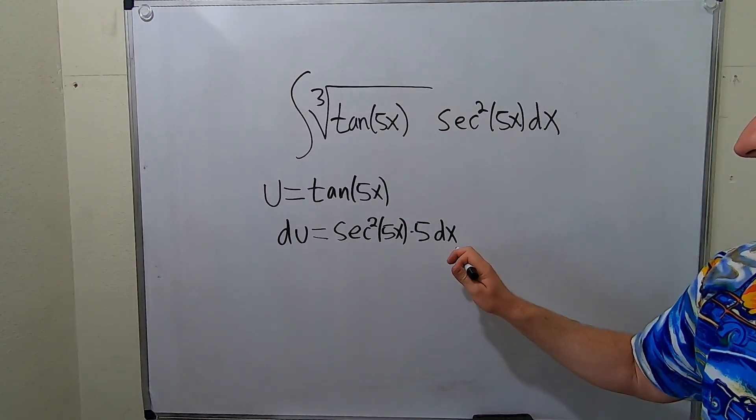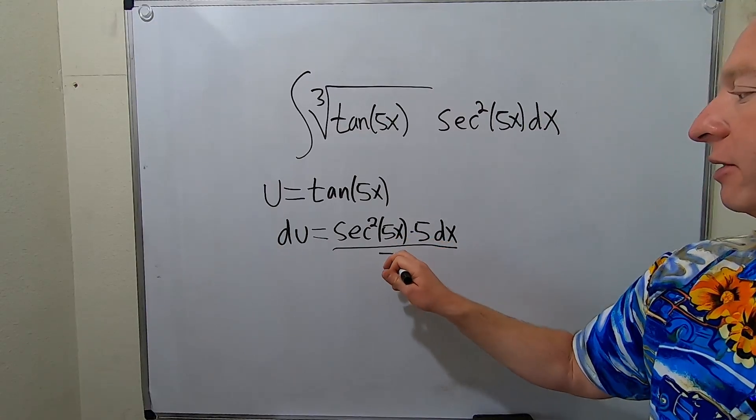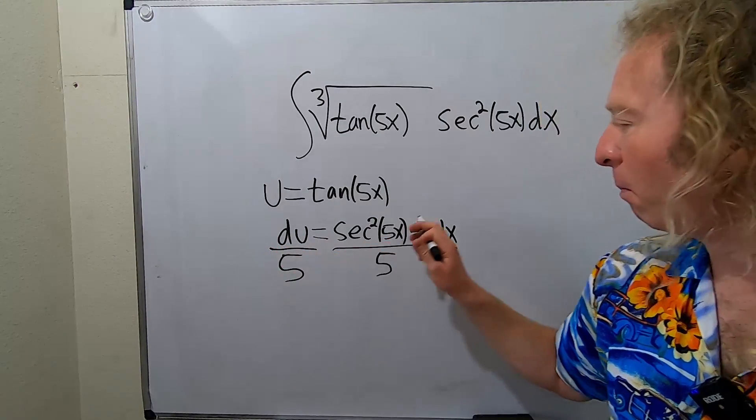So we'll divide by the 5, because it's being multiplied. So that's the inverse operation.